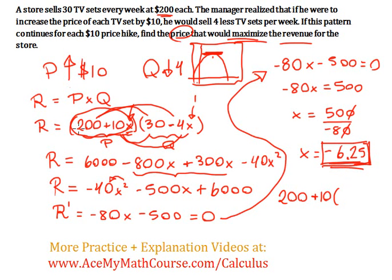Because the revenue function is going to work out to be a parabola that looks something like that. So if I plug in the negative 6.25 here for x, I get the price. What price? The price that maximizes the revenue.